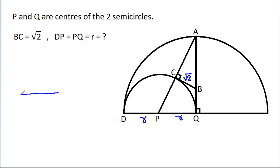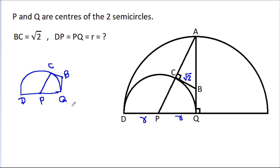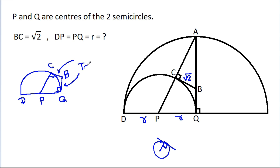We have a semicircle with points D and Q, center P, and points C and B. These angles are 90 degrees. In any circle, the radius and tangent are perpendicular to each other. That means BC and BQ will be tangents.